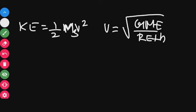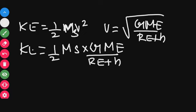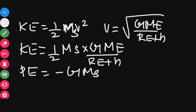We substitute v squared — the square root is removed — so kinetic energy becomes half into mass of the satellite into G into Me divided by Re plus h. We have already found the potential energy as minus G into Ms times Me divided by Re plus h.